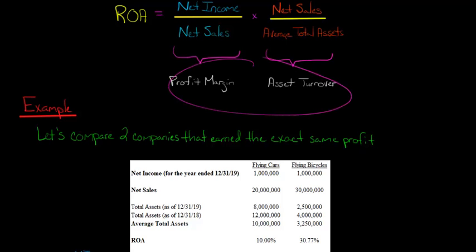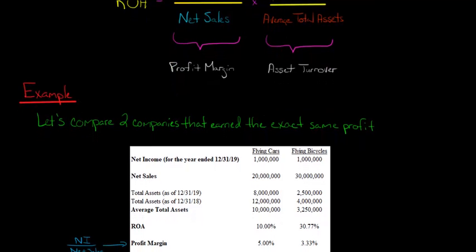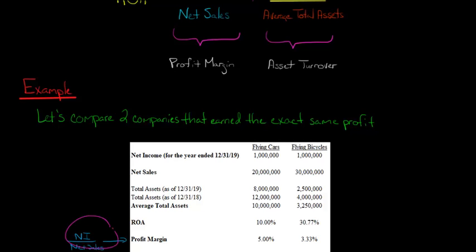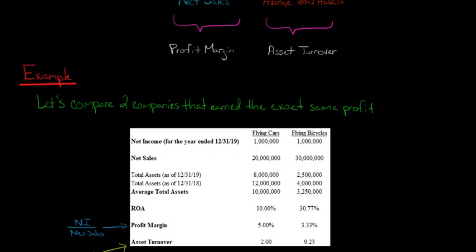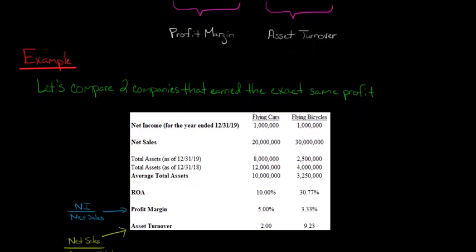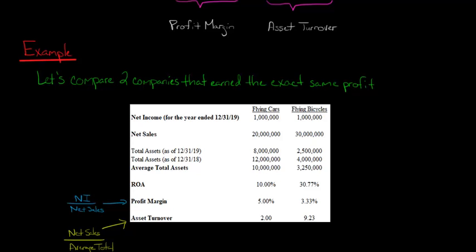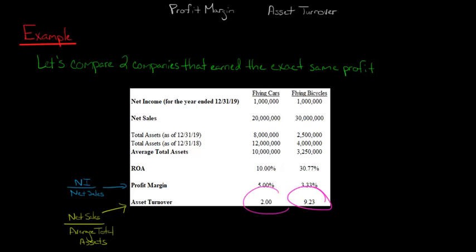Now we want to break this down into profit margin and asset turnover to learn something. The profit margin — net income divided by net sales — for flying cars is actually higher than that of flying bicycles, even though flying cars has the lower ROA. So for every dollar of sales, more of it ends up as net income for flying cars than for flying bicycles.